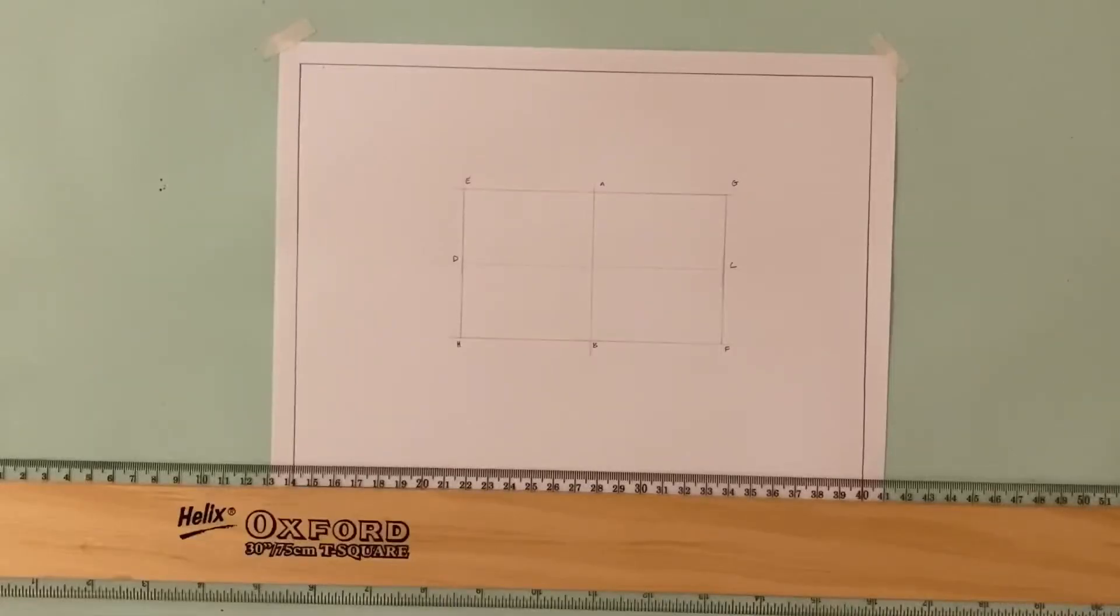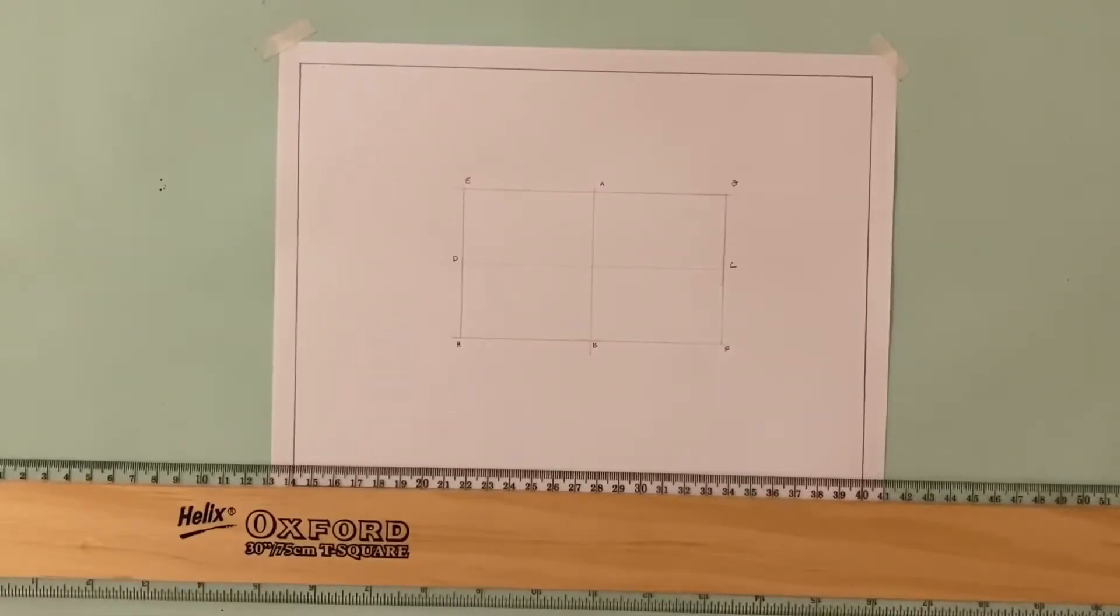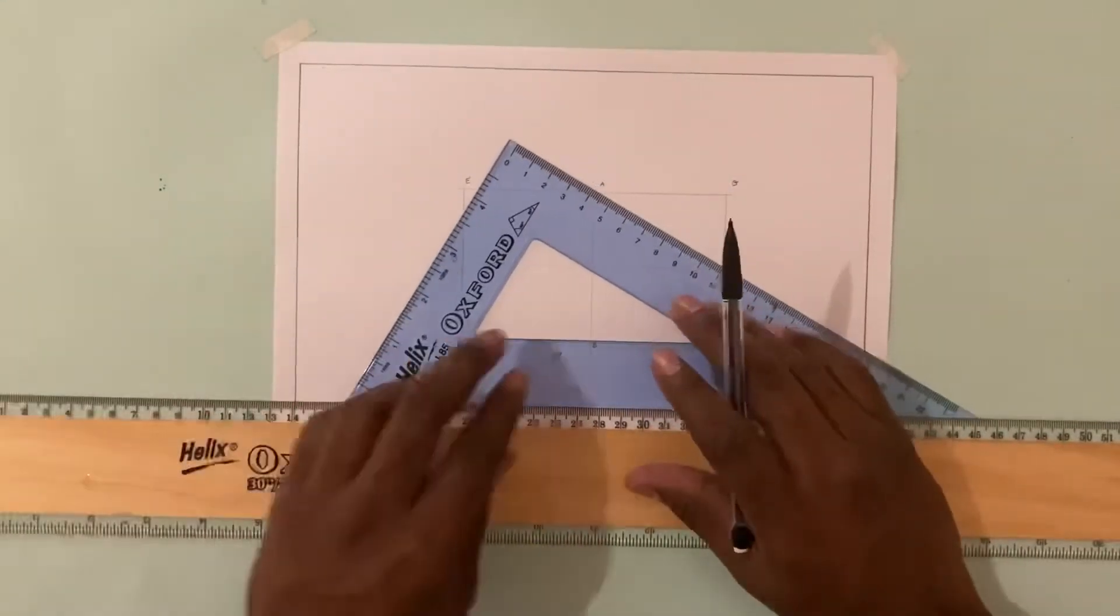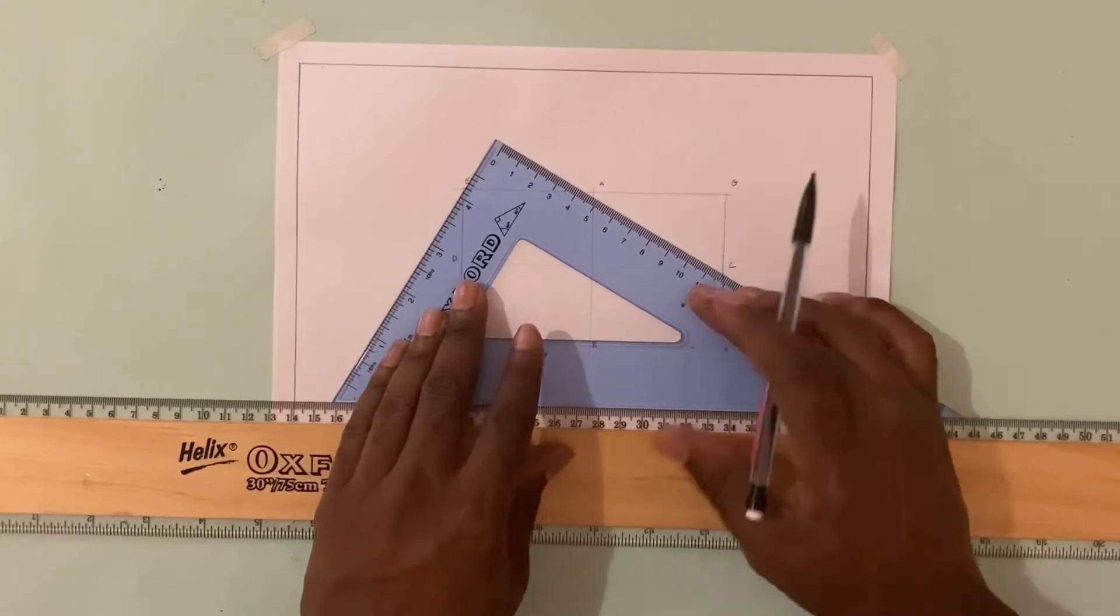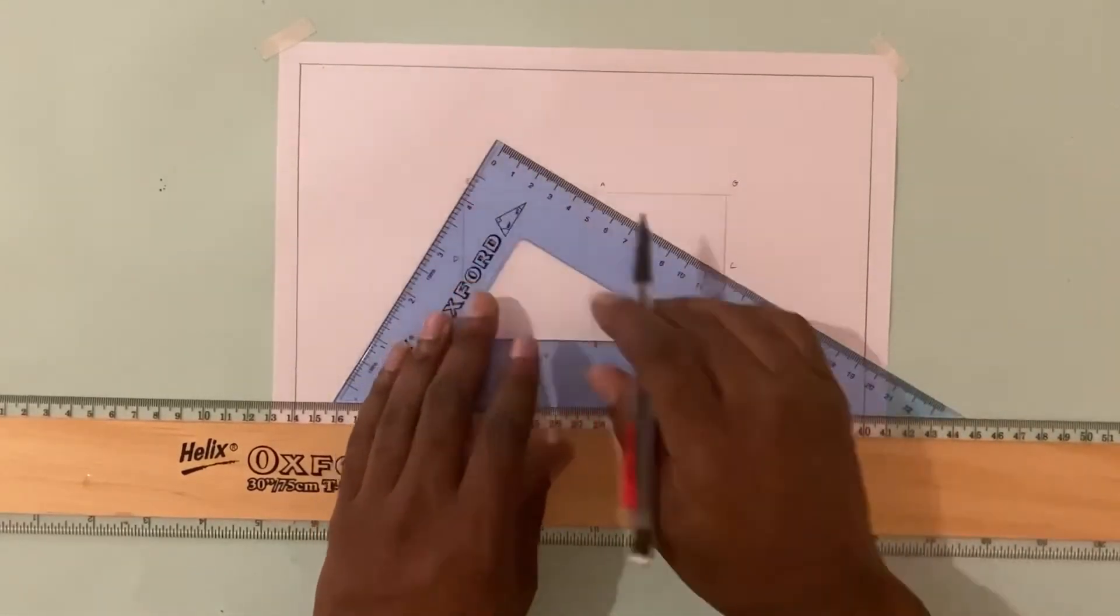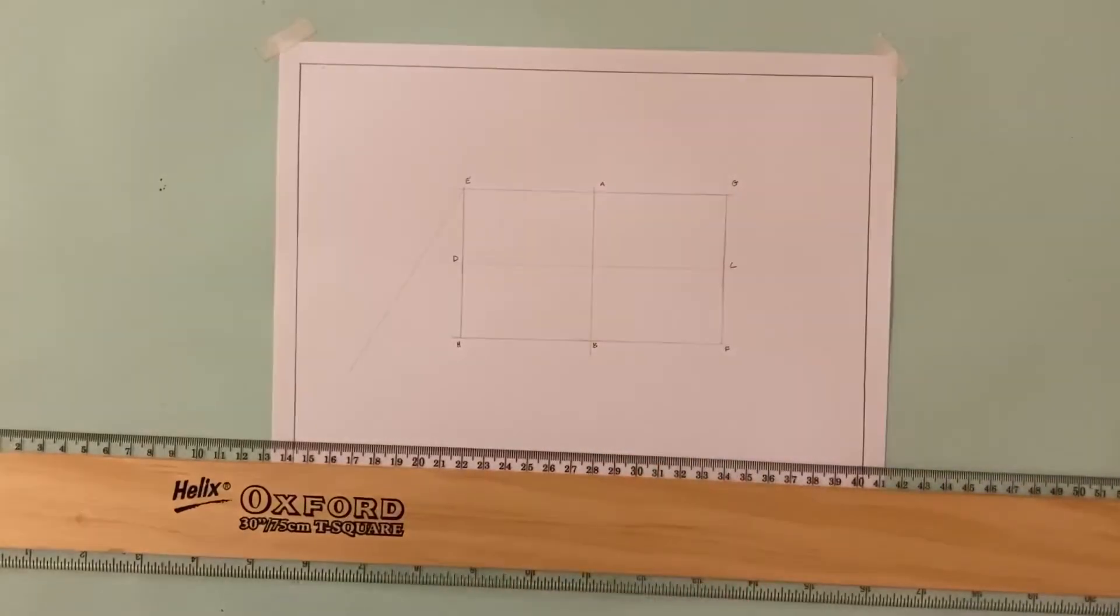I want to divide my line EH into 12 equal parts. By doing so, I'm just going to take my set square and from E I'll draw a line at an angle to the line EH.